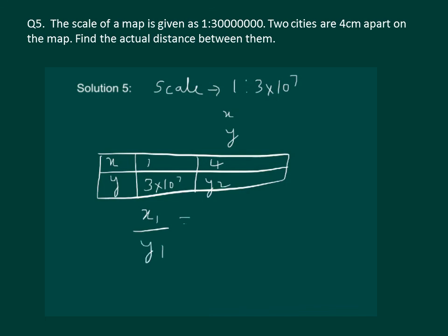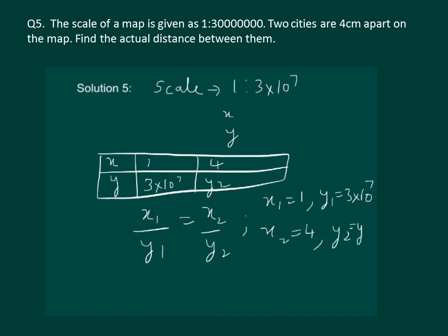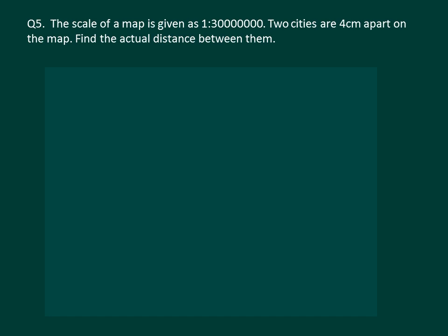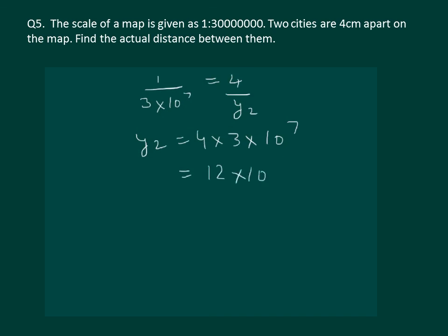Using the property x1 by y1 is equal to x2 by y2, we substitute x1 equal to 1, y1 equal to 3 into 10 to the power 7, x2 equal to 4, and we have to find y2. On substitution we get 1 by 3 into 10 to the power 7 is equal to 4 by y2. On cross multiplying, y2 is equal to 4 into 3 into 10 to the power 7, which equals 12 into 10 to the power 7. This is the required answer.